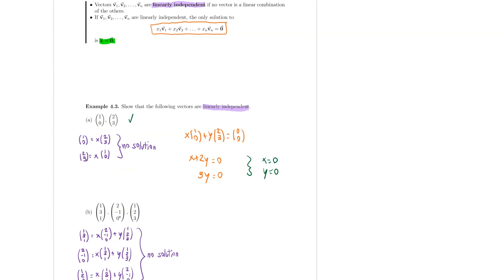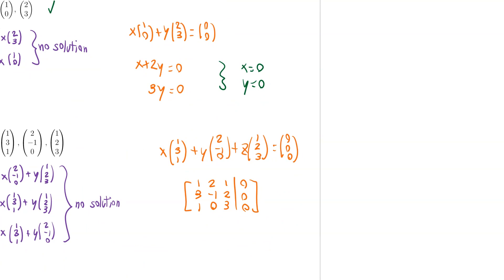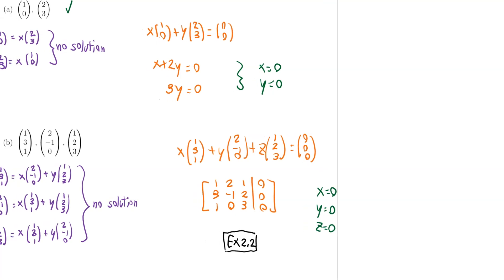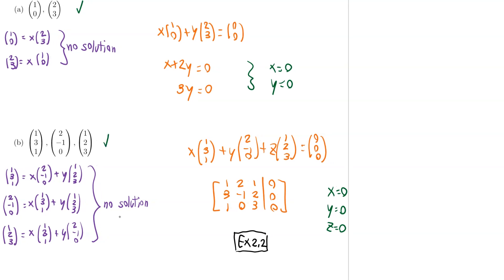For part b, I set up the same type of equation: x times the first vector plus y times the second vector plus c times the third vector (1, 2, 3) equal to zero. Writing this in augmented matrix form, the columns are (1, 2, 1), (3, -1, 2), (1, 0, 3), with the right-hand side all zeros. We have solved this system already in example 2.2, and the solution is x, y, and c all equal to zero. This is the only solution, which means the three vectors are indeed linearly independent.